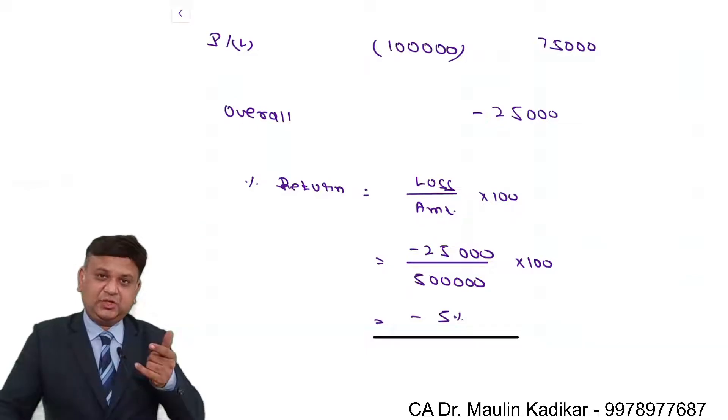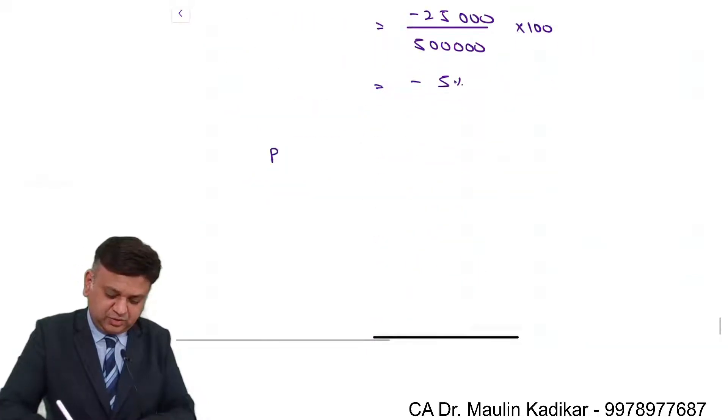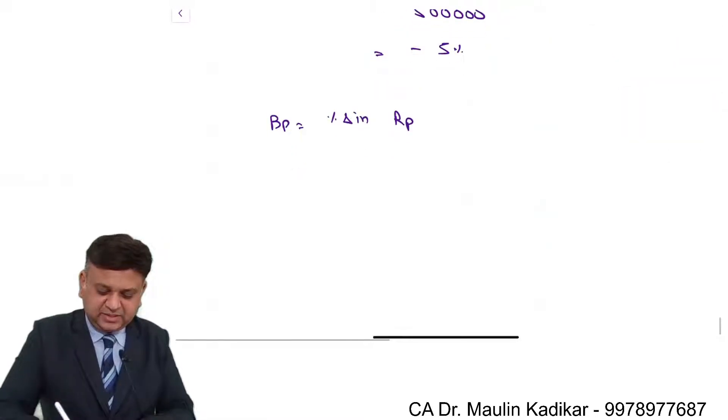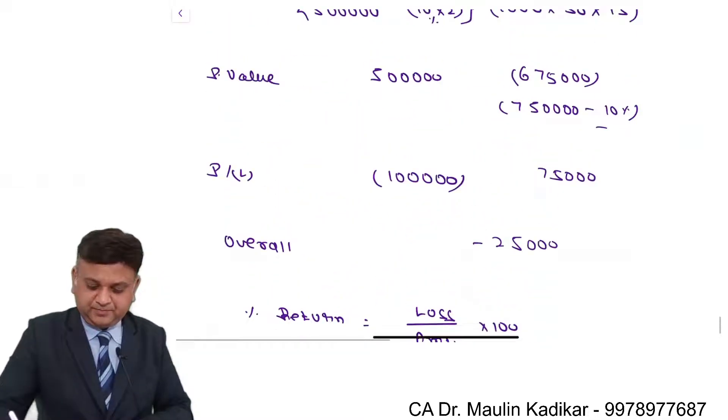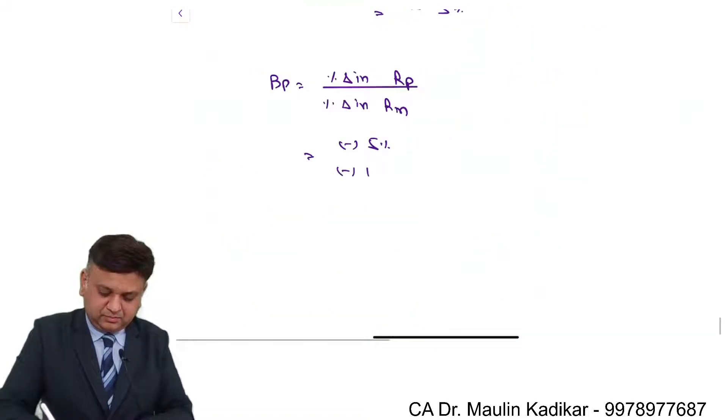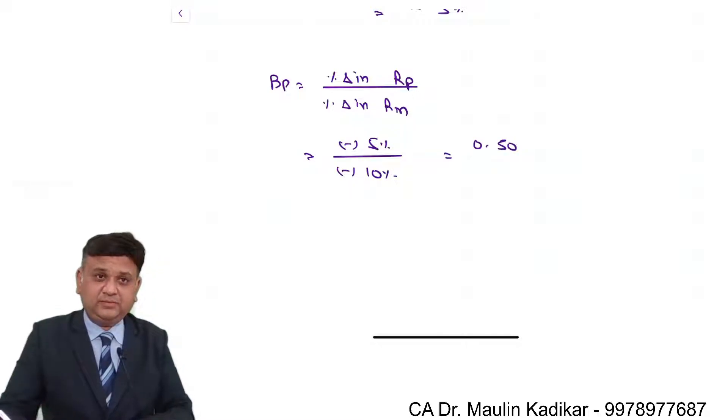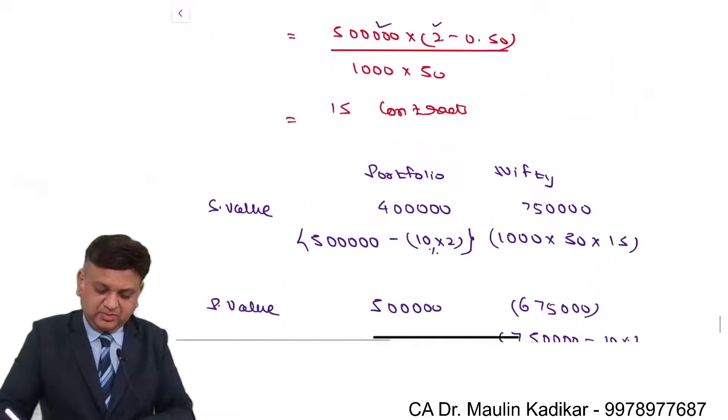Now we understand again logically that beta of the portfolio is percentage change in RP divided by percentage change in market. So it is negative 5% divided by negative 10%. So the answer is exactly 0.5, which we wanted. This is a way we can also have a cross verification of the answer.